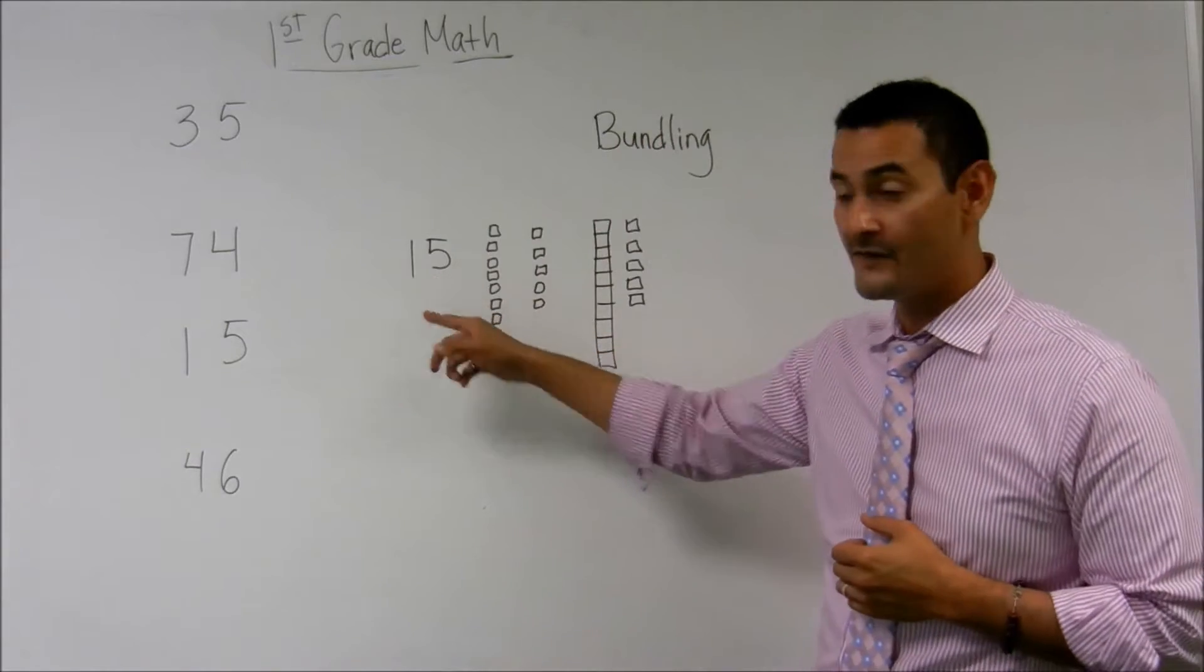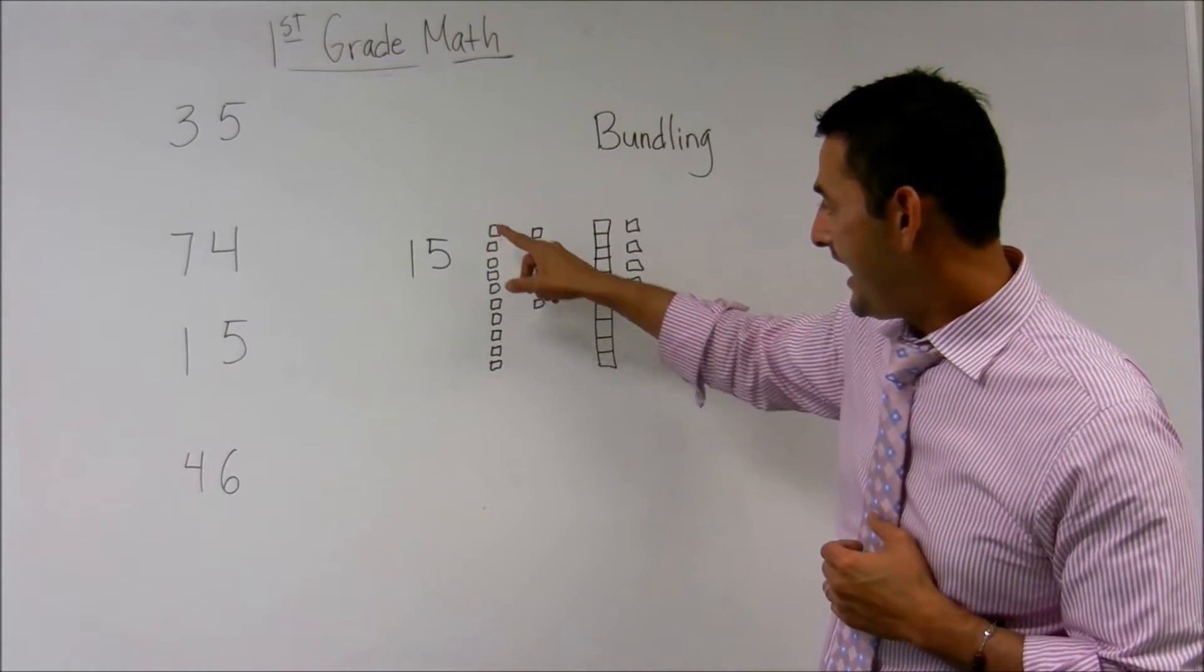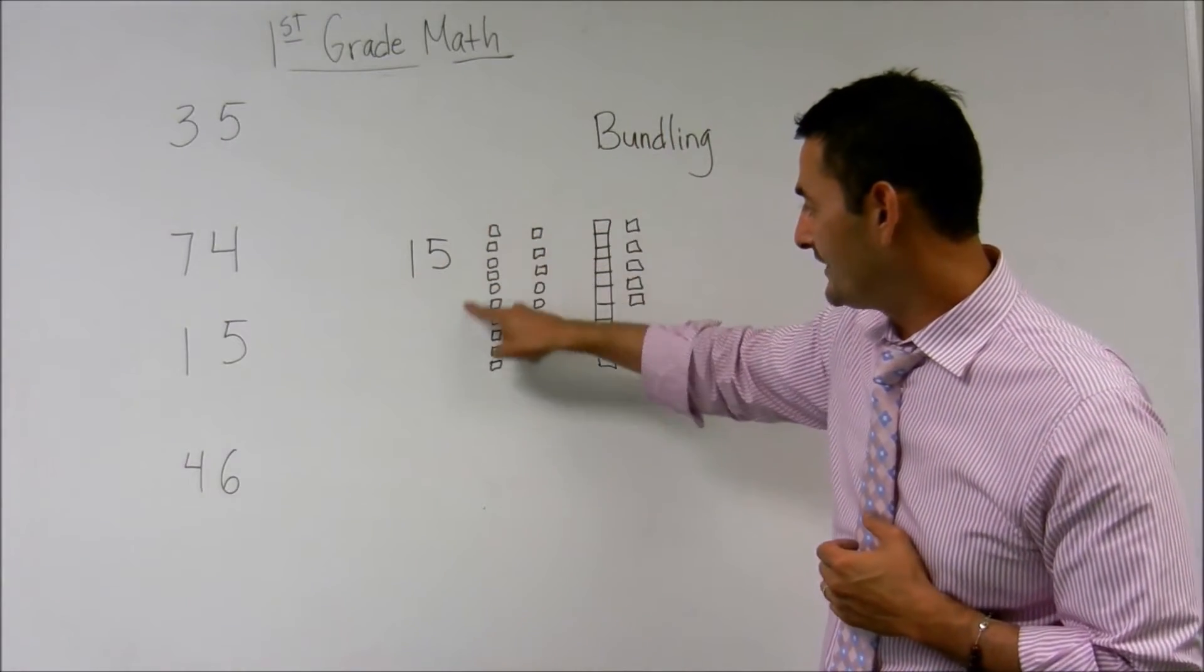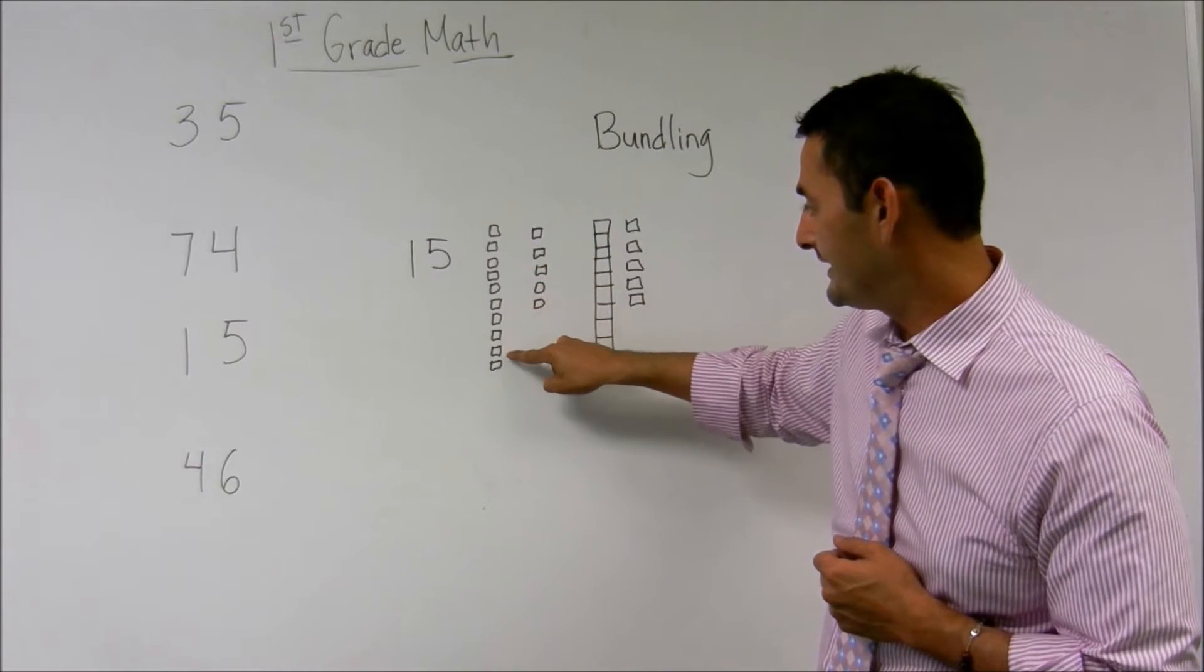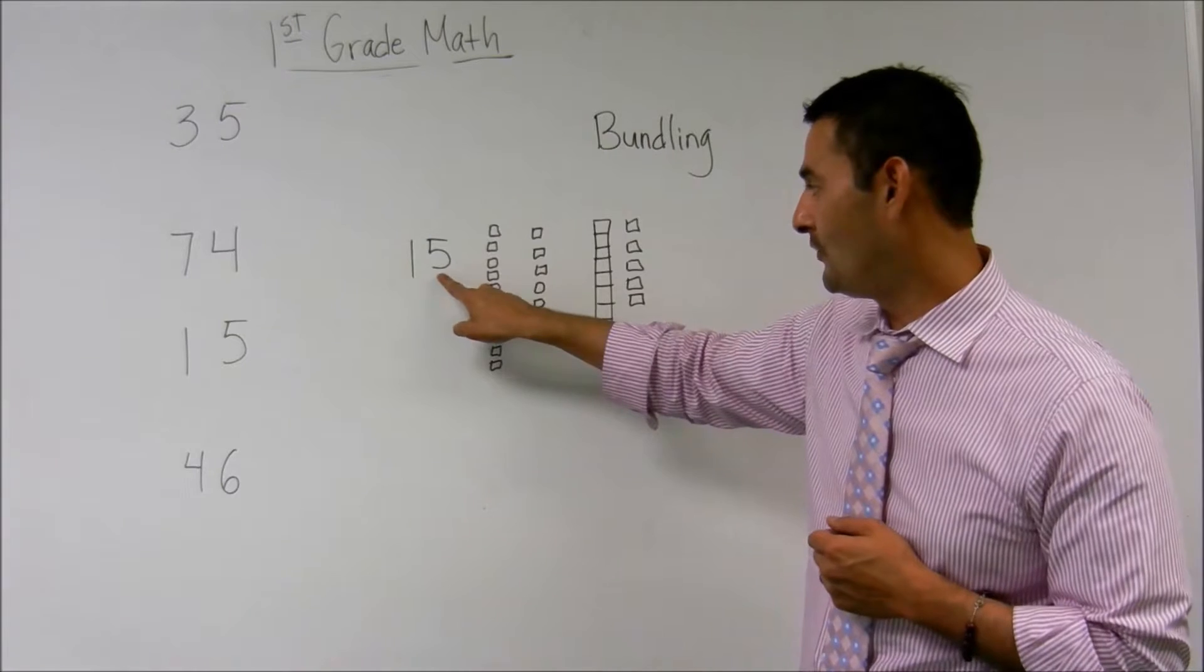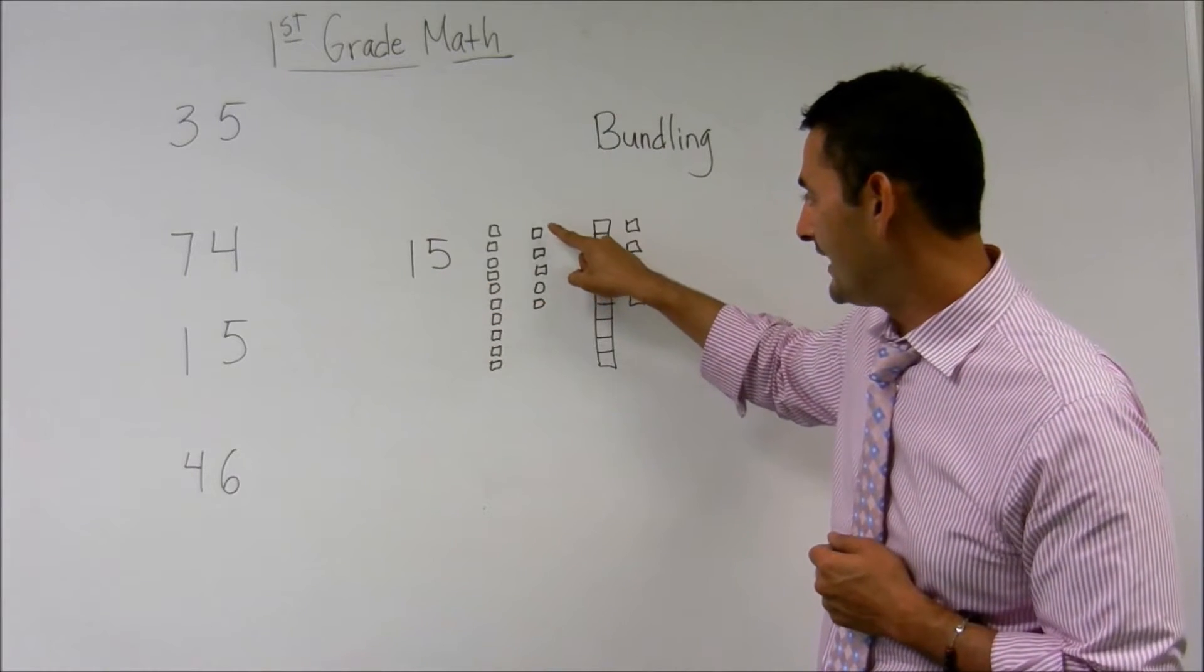Let's look at this number here. This number is fifteen. And here in the tenths place, we've got ten. One, two, three, four, five, six, seven, eight, nine, ten. And here in the ones place, we've got five.